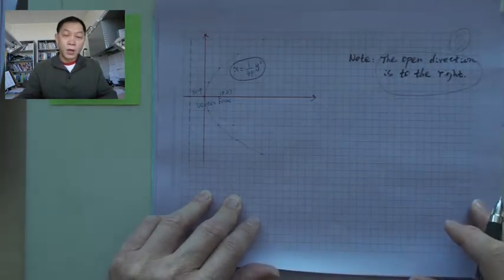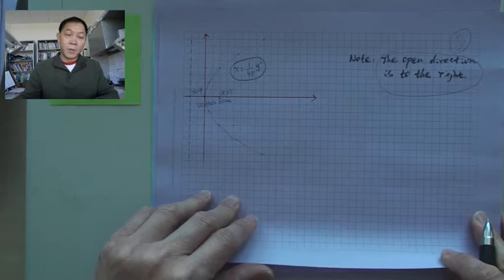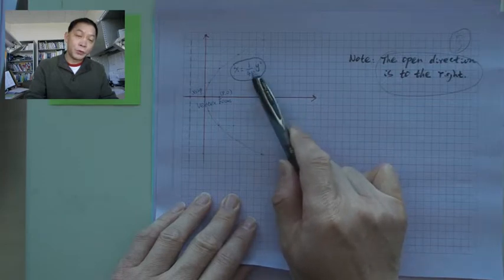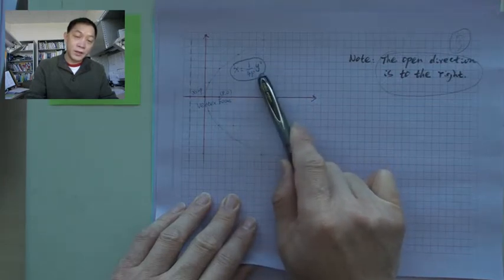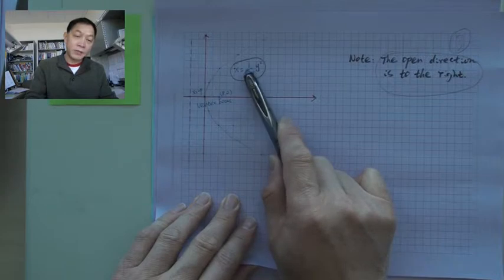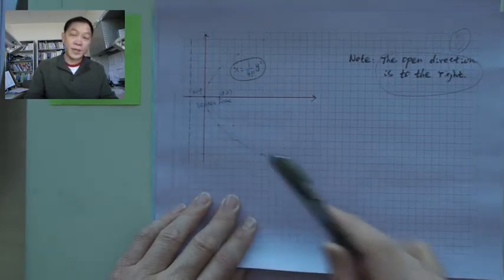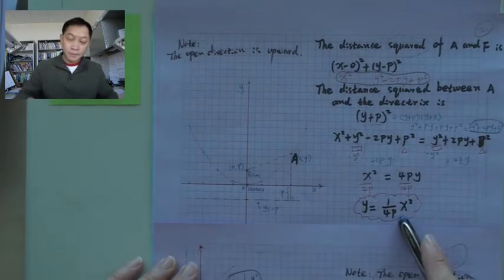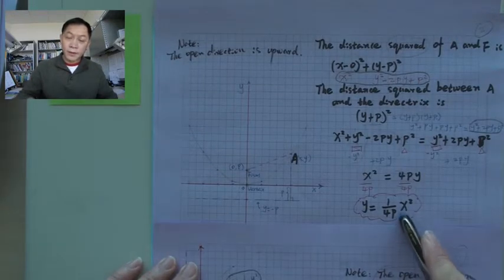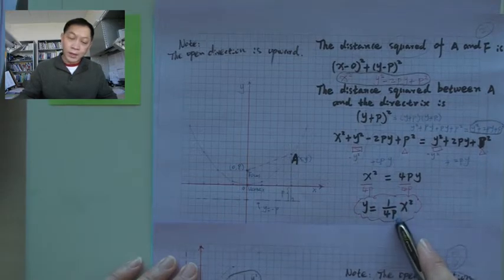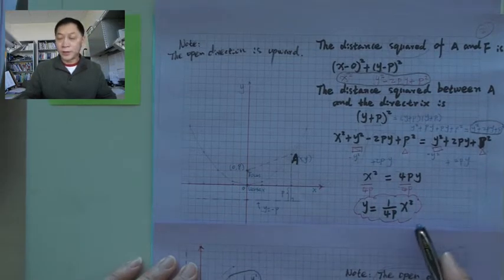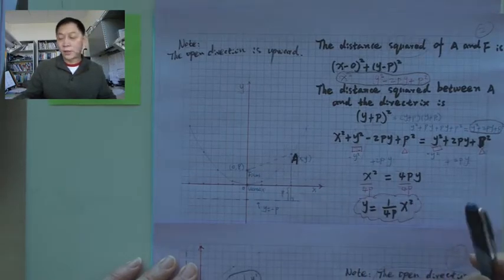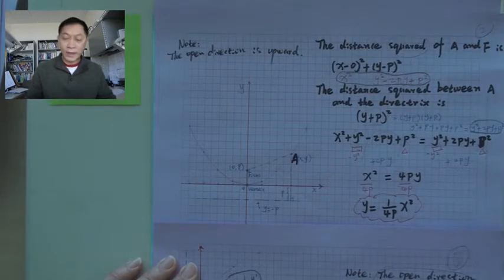So remember the standard form. So if the equation is not given in this form, you want to write either like this, positive or negative. Negative means to the left. And also, this one, 1 over 4p. You need p. And p is the distance between focal point and vertex.